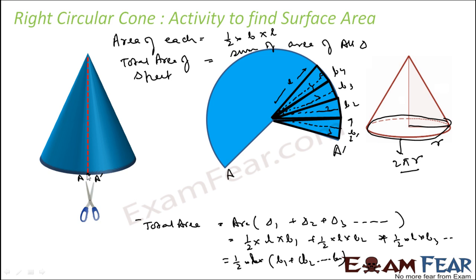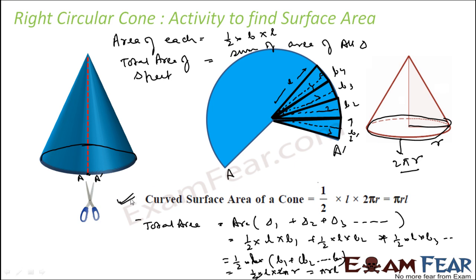So from A to A-dash, the length is 2πr. Replacing b1 + b2 + ... with 2πr, the total becomes one-half times l times 2πr. The 2 cancels, and you get πrl. That is the curved surface area of the cone: πrl. Hope you understand — the curved surface area of the right circular cone is πrl.